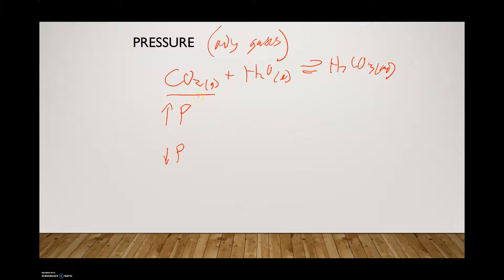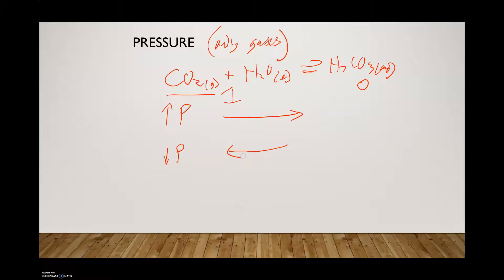On the left-hand side you have one mole of gas; on the right you have zero moles. If you increase the pressure, you stress the left side because that's where the gas is — pressure affects gases only. So increasing pressure causes it to shift to the right. If you decrease the pressure, the equilibrium shifts back to the left, bringing back the CO2 to rebalance the equilibrium.